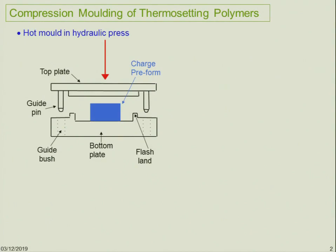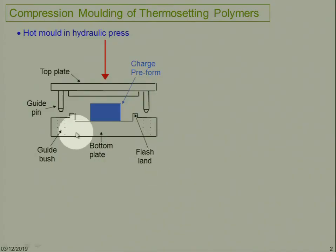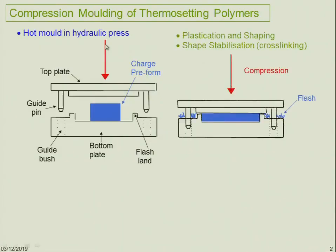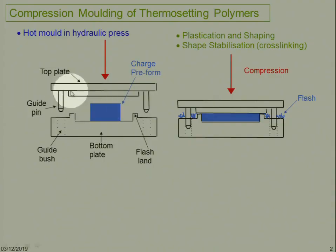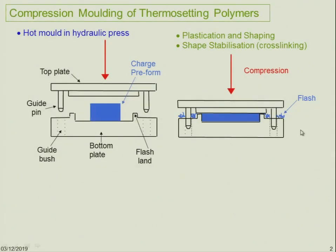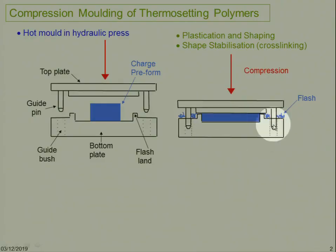We preheat the mold to the temperatures required — maybe 100 to 120 degrees depending on the material. This process is mostly for thermosetting materials. Once the mold is heated, we place the charge as a preform into the mold, and then the top plate moves down. We apply a compressive force, and the material flows around the die and tries to take the shape of the mold cavity. We must ensure the mold is completely full, so we add a little extra material.